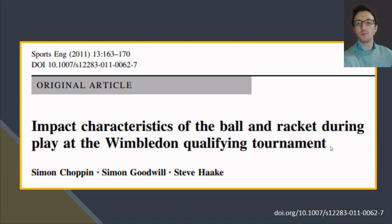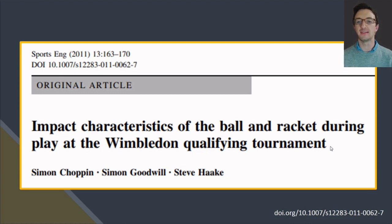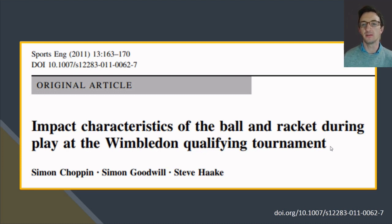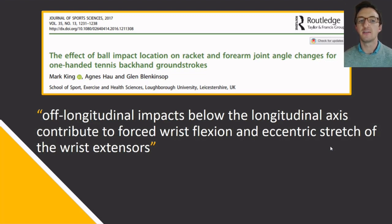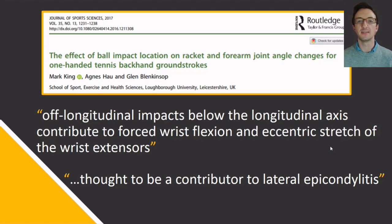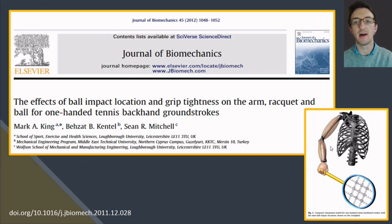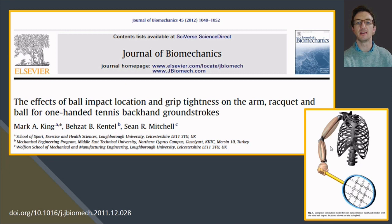Earlier I mentioned how it was important to consider the actual technique of the whole body when thinking about racket design. Here the opposite applies: we need to consider the equipment when investigating the player's chosen movement solution. We should also not forget the importance of injury risk reduction. One common injury is tennis elbow or lateral epicondylitis. Research showed that off-longitudinal impacts contributed to forced wrist flexion and an eccentric stretch of the wrist flexors, thought to be a contributor to tennis elbow, with the effect greater when grip force is higher.